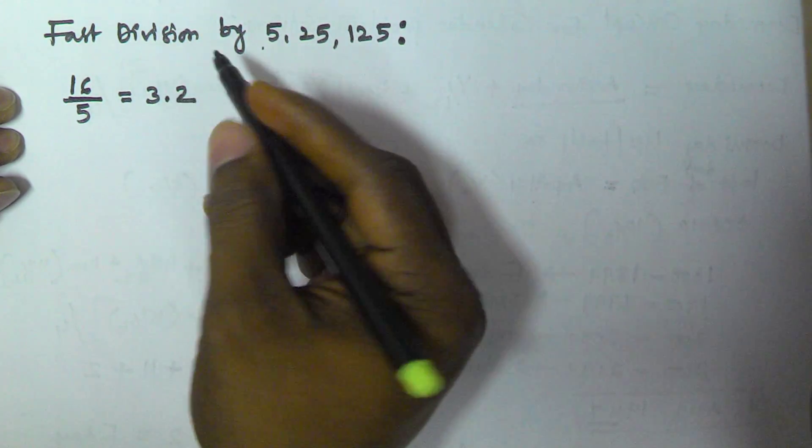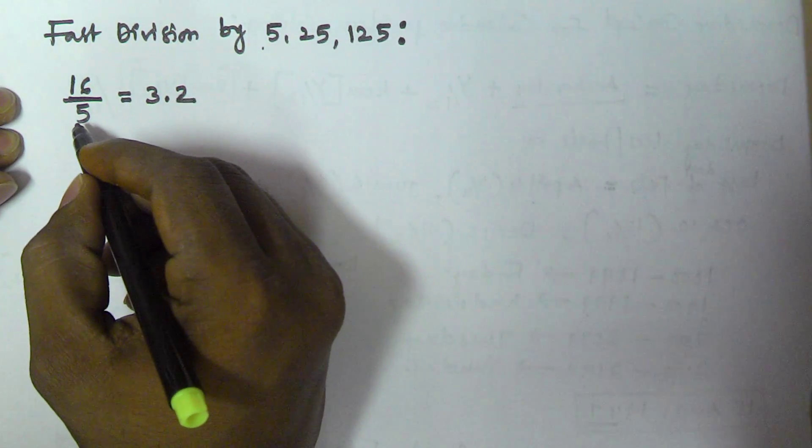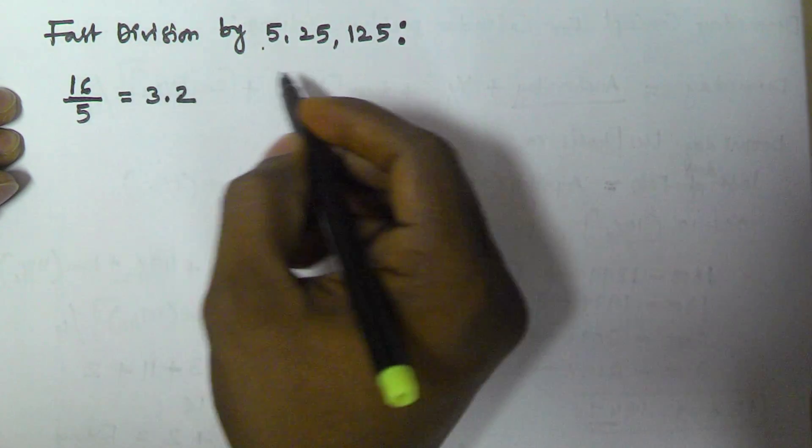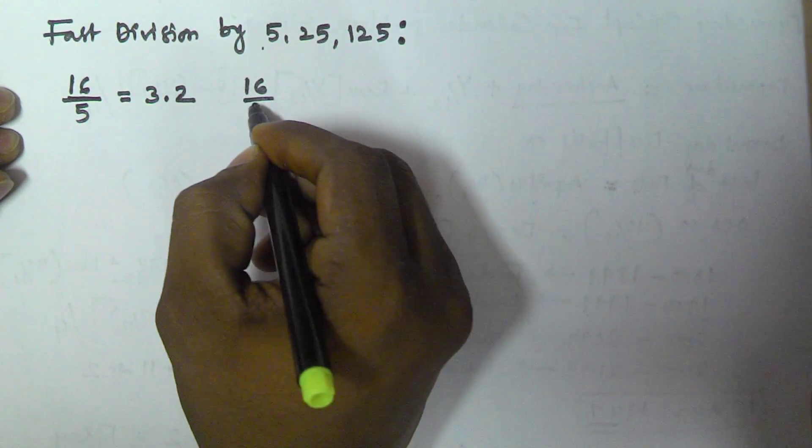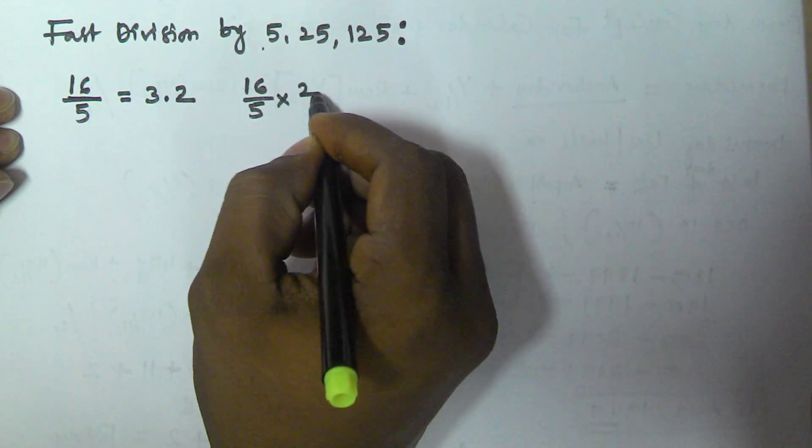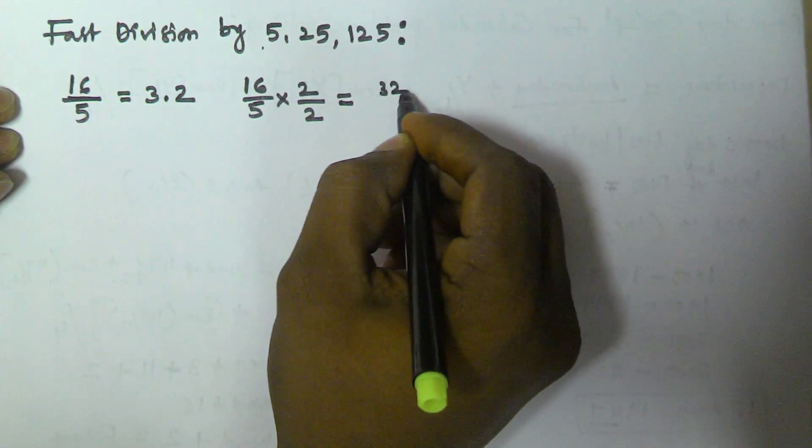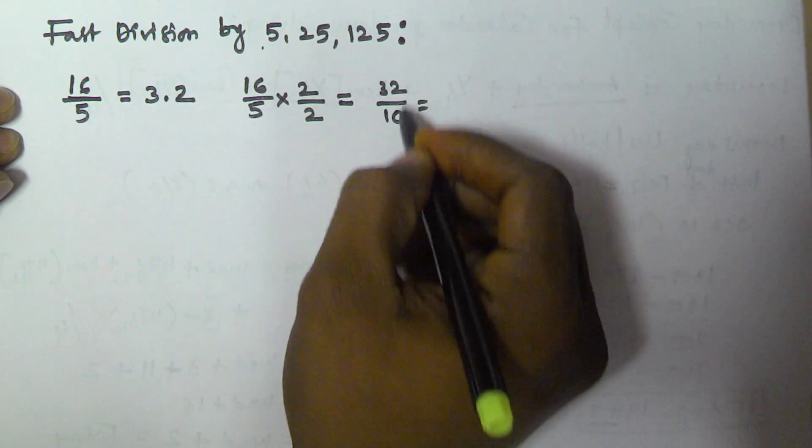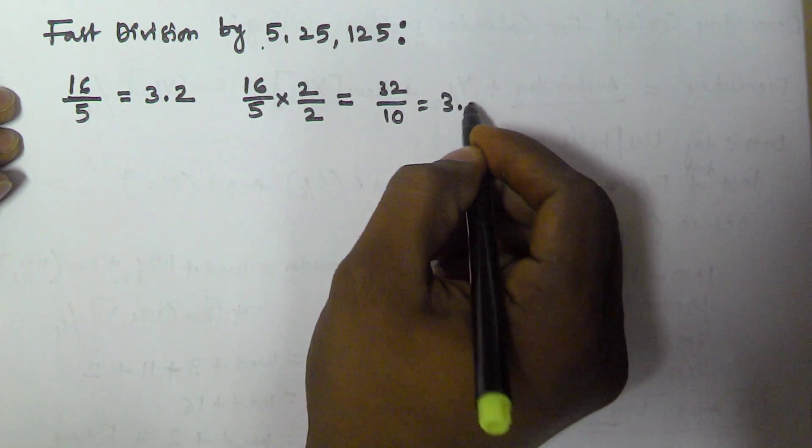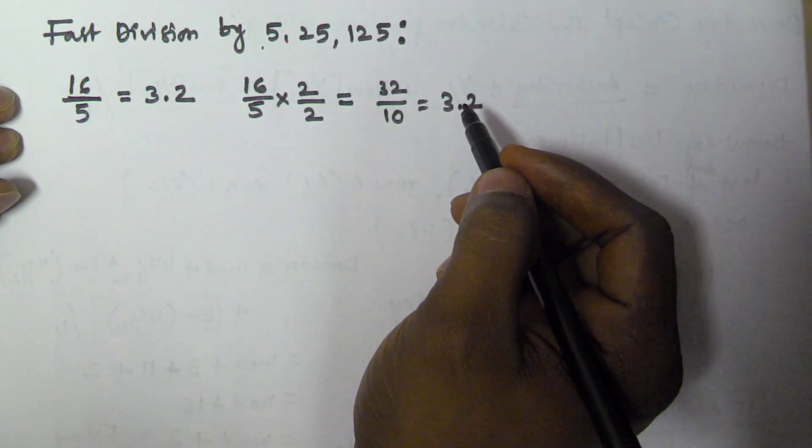Instead of doing this calculation, whenever you are dividing a number by 5, simply multiply the numerator and denominator by 2. Then we get 32 by 10, so 32 by 10 easily gives you 3.2.